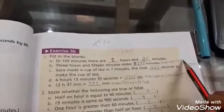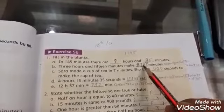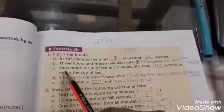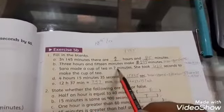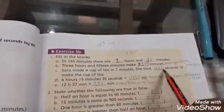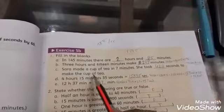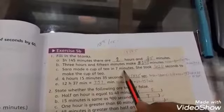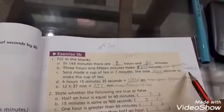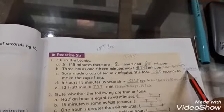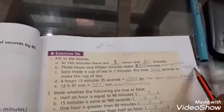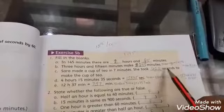Sara made a cup of tea in seven minutes. She took dash seconds. To convert minutes to seconds, multiply by 60. 7 times 60 is 420 seconds.